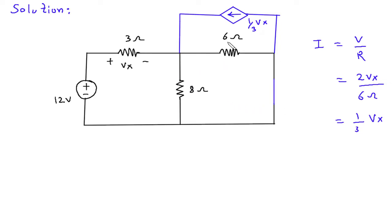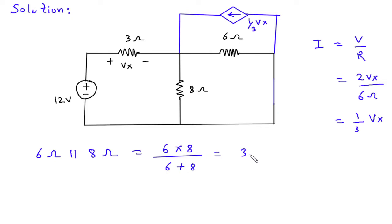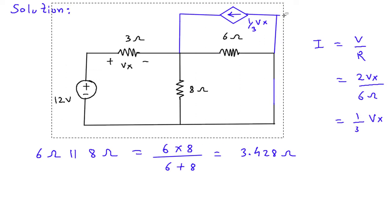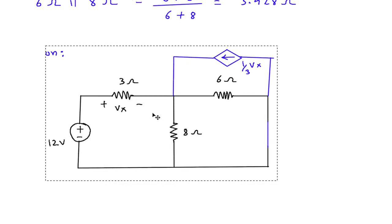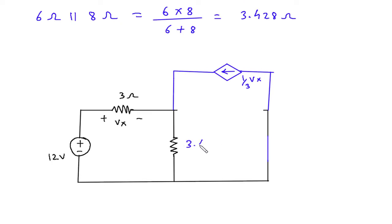Now, as we can see that this 6 ohm and 8 ohm are in parallel. 6 ohm parallel with 8 ohm gives 6 times 8 divided by 6 plus 8, which equals 3.428 ohm. So we will redraw the circuit with this 3.428 ohm.